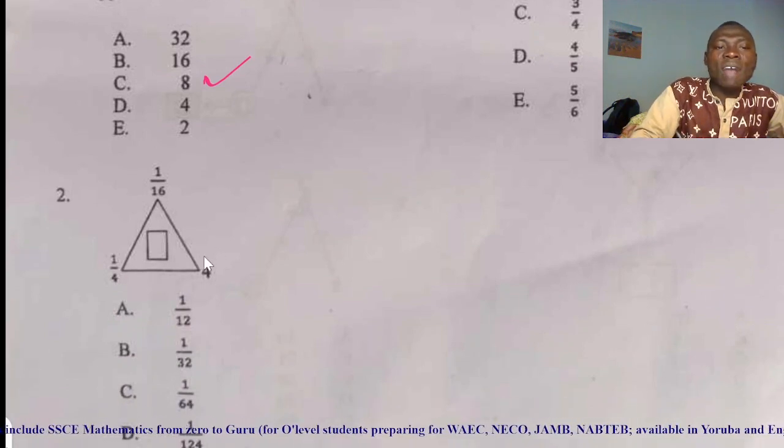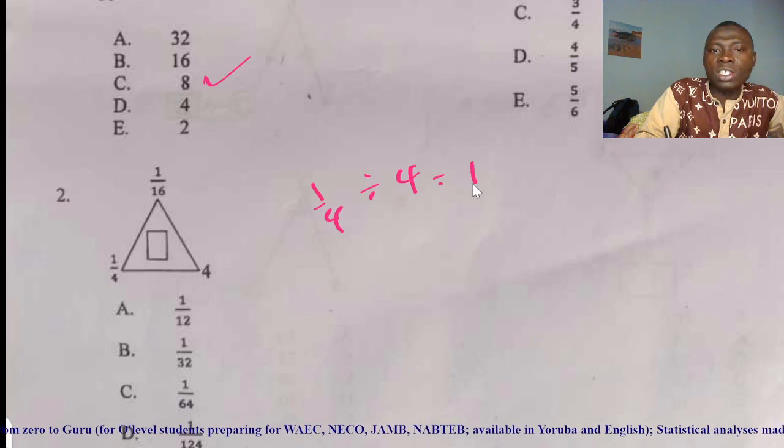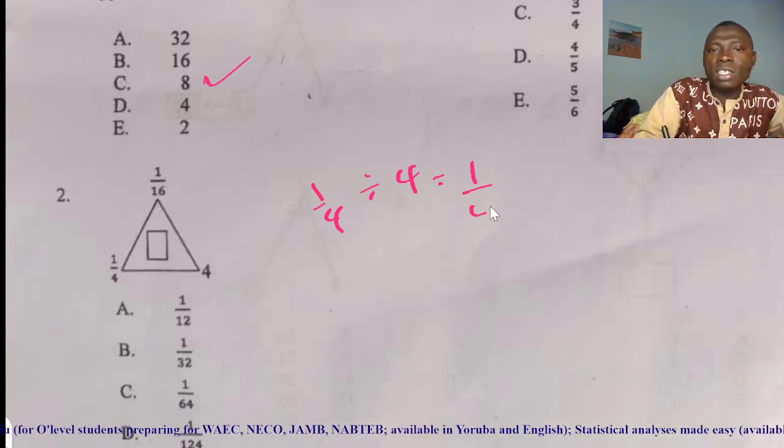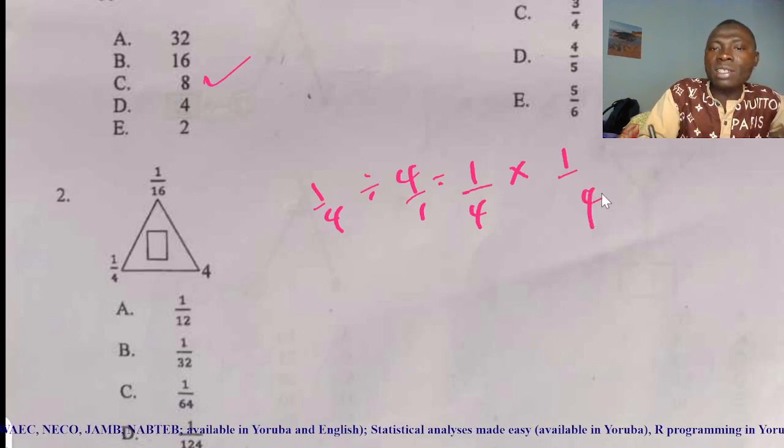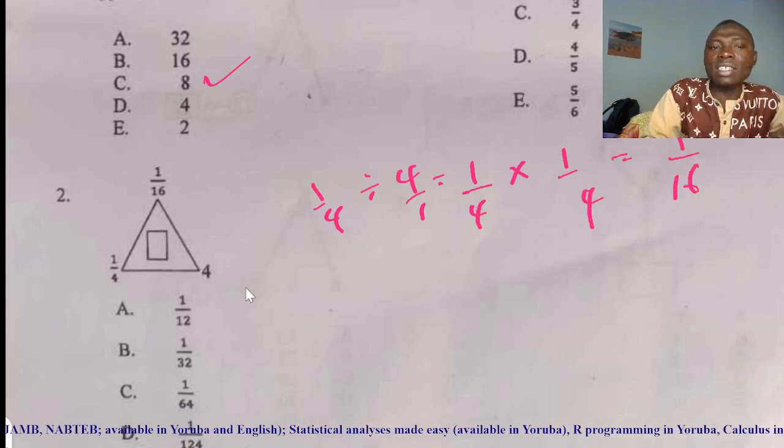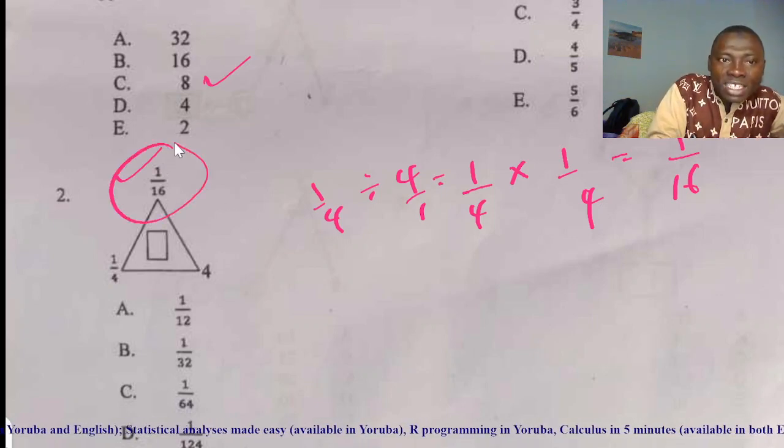Look at this one as well. You have 1 over 4 divided by 4. One over 4 divided by 4, you can change your division to multiplication, that you multiply by 1 over 4 again, which gives you 1 over 16.